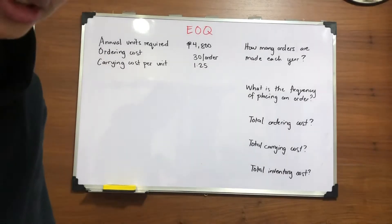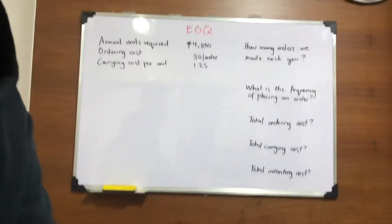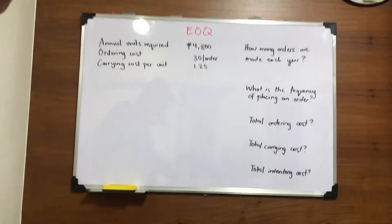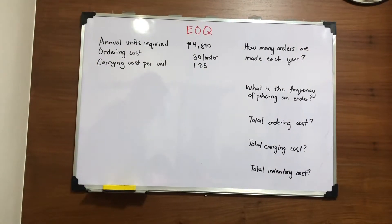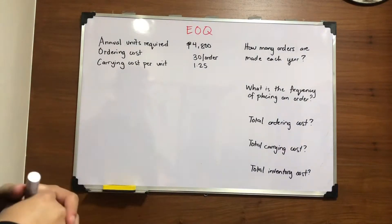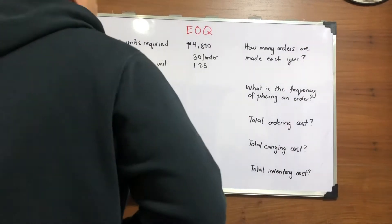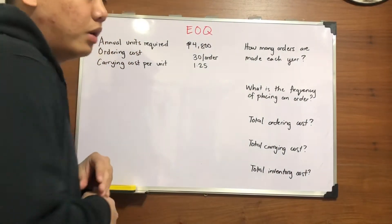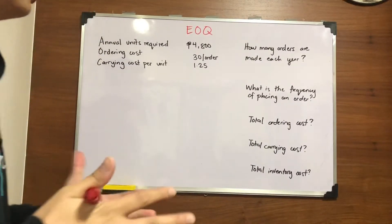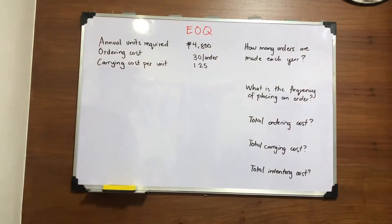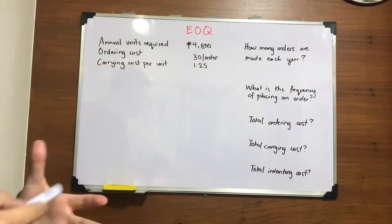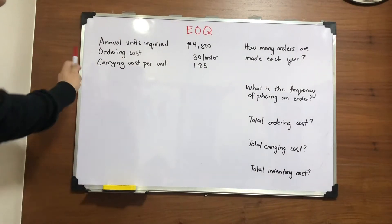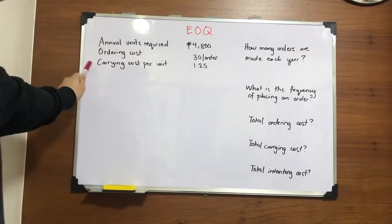Let's determine first what is the formula for EOQ. But before jumping to the determination of the formula, let's first discuss this. For EOQ, the concept is for us to determine the cheapest price for the cost of the inventory — the ordering cost as well as the carrying cost.